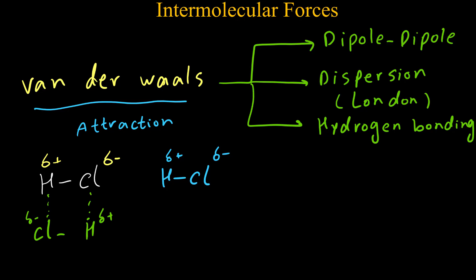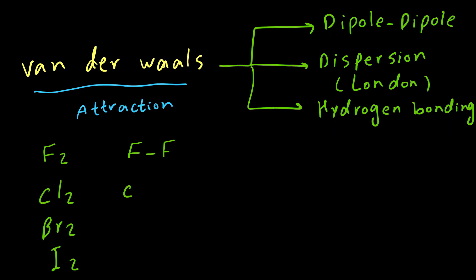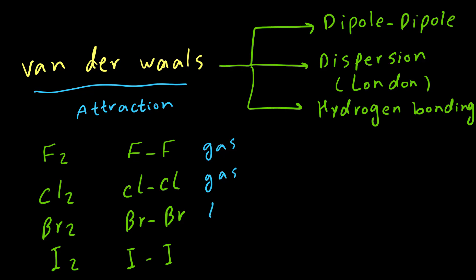For non-polar molecules like F2, Cl2, Br2, or I2 - all of these halogens have non-polar molecules. But if we check their physical properties, we see fluorine and chlorine are gases, bromine is liquid, and iodine is solid. The physical state depends on intermolecular forces. Since we have no polarity and no dipole moment, the important force for non-polar molecules is dispersion force, or London force.